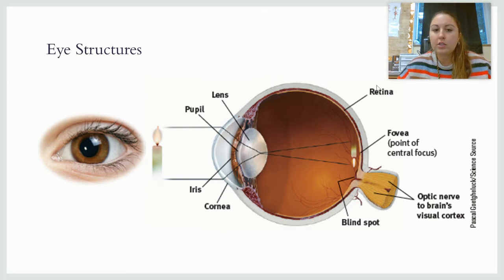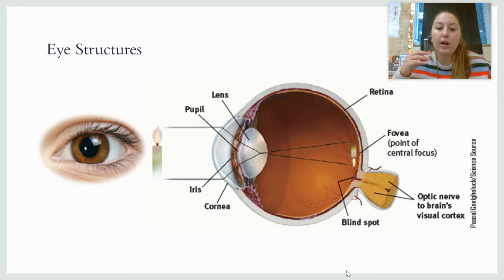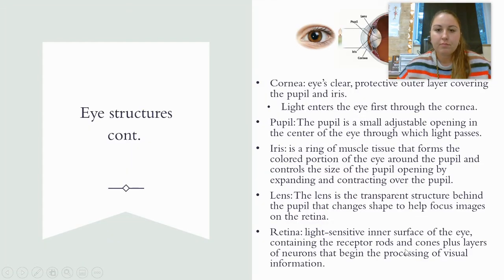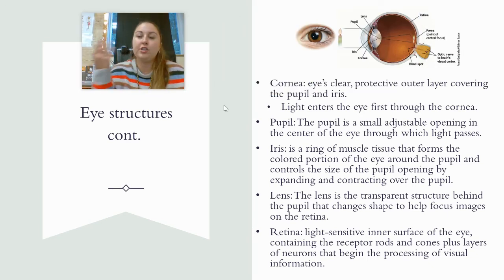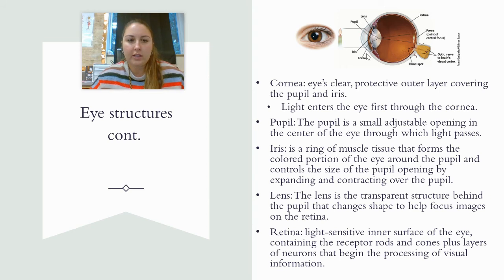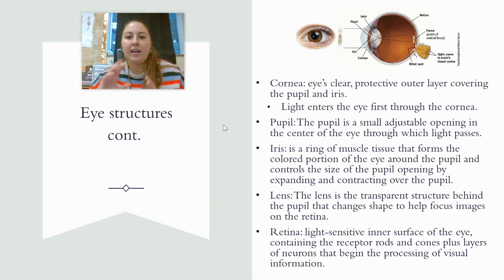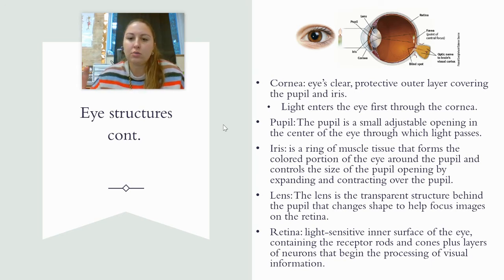Now, eye structures. We're going to talk about all of these — refer back to this slide for more detailed imaging of the eye and its structures. On the outer layer, if I were to touch your eye, I would likely be touching the cornea. The cornea is the eye's clear, protective outer layer, and it covers the pupil and the iris. The first place that light's going to enter is through the cornea.